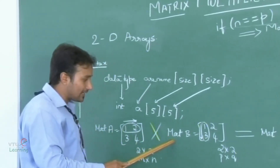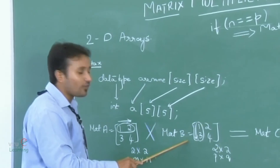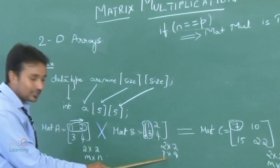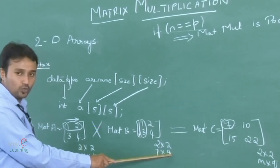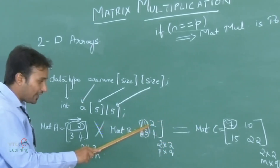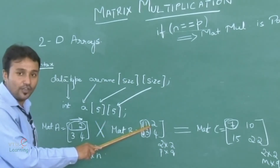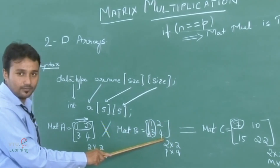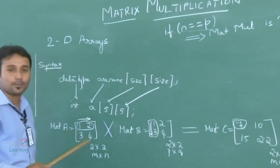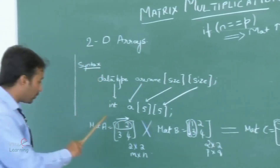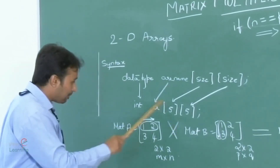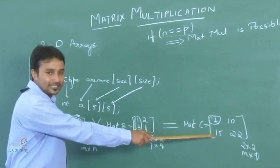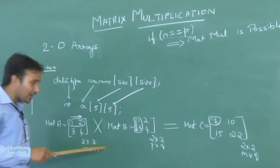Similarly, matrix B is also of the order 2 cross 2, with a generalized order structure known as P cross Q. Here also we can see that there are totally 4 elements: 1, 2, 3 and 4. The main idea behind this program is to compute matrix A multiplied with matrix B and show the result in one more matrix C.